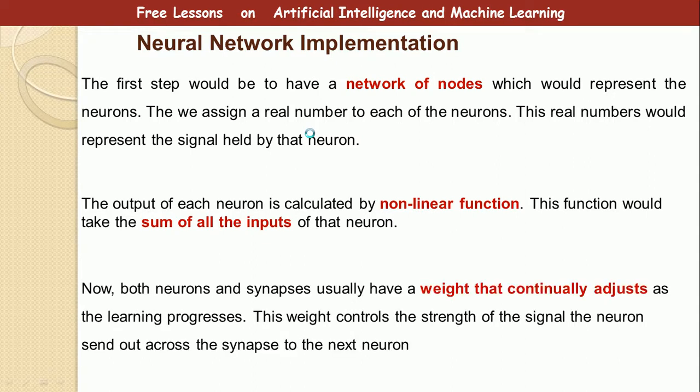This function will take the sum of the inputs to that neuron. So it means that a neuron will have a number of inputs. To produce an output, you must take note of all these inputs. Now, both the neuron and the synapse, remember the synapse means the connection line to this neuron. Both the neuron and the synapse usually have weights that continually adjust as the learning progresses. We will talk about learning later. The weight controls the strength of the signal the neuron sends out across the synapse to the next neuron.